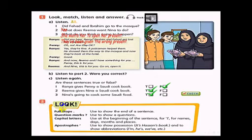Moving to exercise 2. Look. These are some punctuation marks. When do we use full stops, question marks, capital letters, and apostrophes? Full stop. Use to show the end of a sentence, a statement. Question marks. Use to show questions at the end of a question. Capital letters. Use at the beginning of a sentence, any sentence, for I, for names, days, months, and places. Apostrophes. Use to show possession. It's Hassan's book. Here is the possession. And to show abbreviation. I am, his, with, etc.